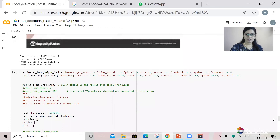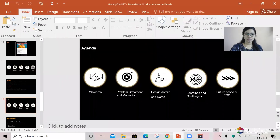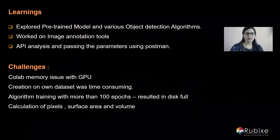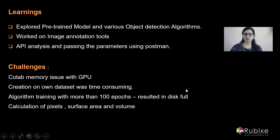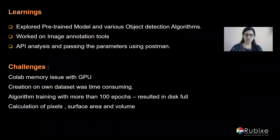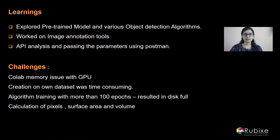To arrive at these results, we faced many challenges. We explored many pre-trained models — we are using the COCO model on top of which we train our data. We also explored many object detection algorithms, including RCNN, Fast RCNN, and Mask RCNN. We found Mask RCNN most accurate because all calculations are based on a single image, and the image must show the masking area for the food based on which we make the calculations. Mask RCNN fulfilled our requirements.